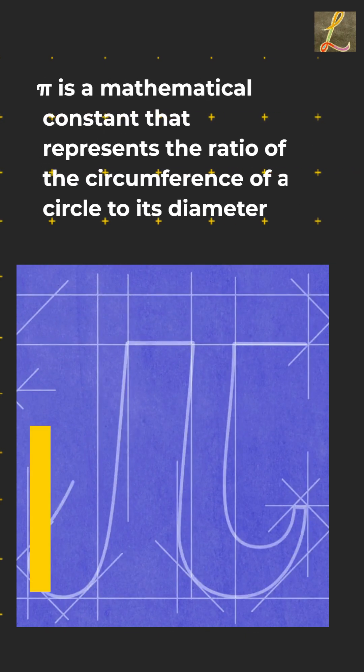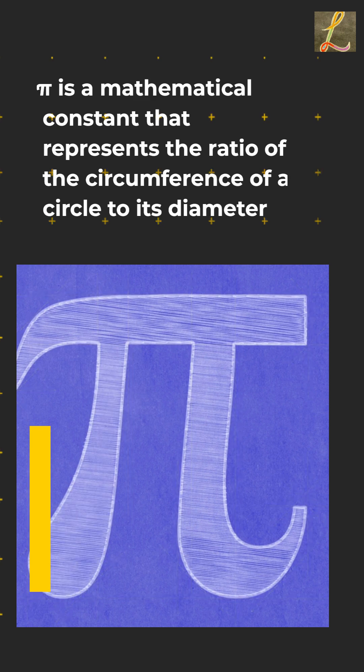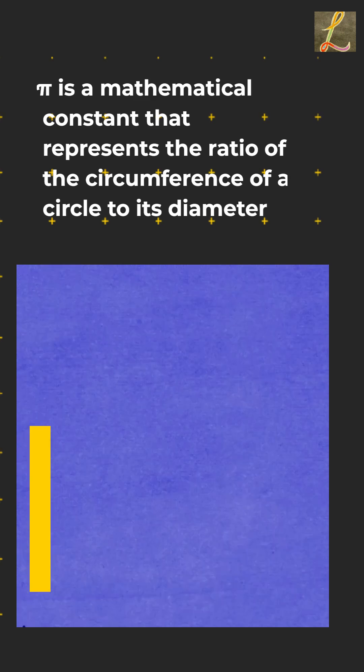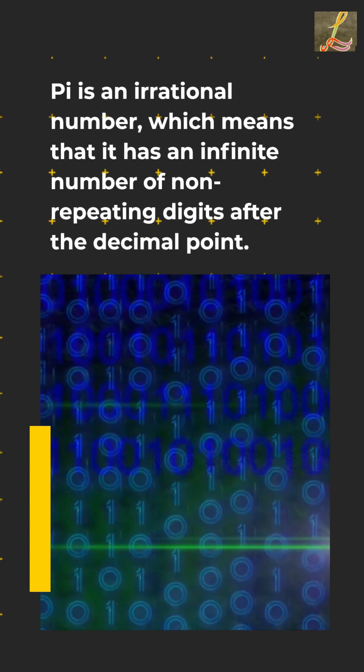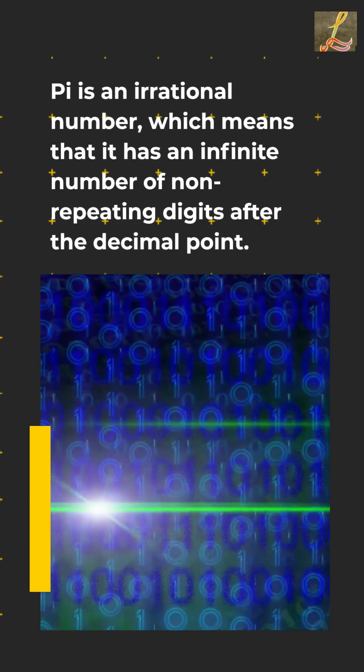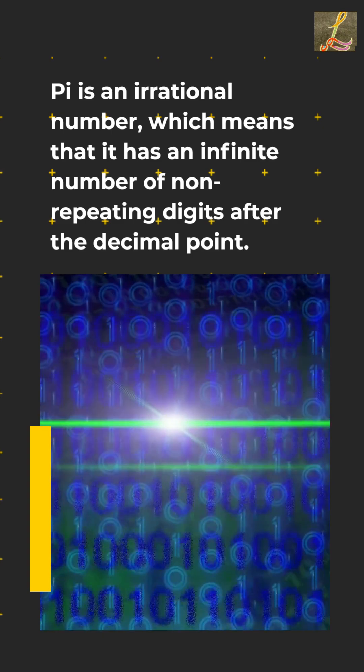Pi is a mathematical constant that represents the ratio of the circumference of a circle to its diameter. Pi is an irrational number, which means that it has an infinite number of non-repeating digits after the decimal point.